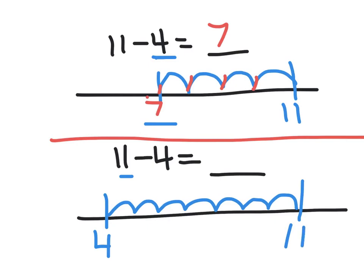Now I have to go back and count how many jumps I made from 4 to 11 to determine the answer: 1, 2, 3, 4, 5, 6, 7 jumps. 7 is the difference.